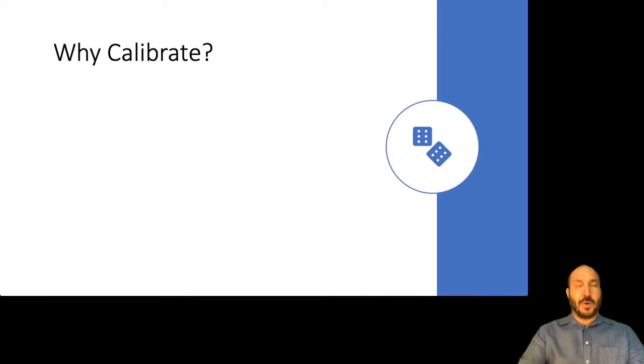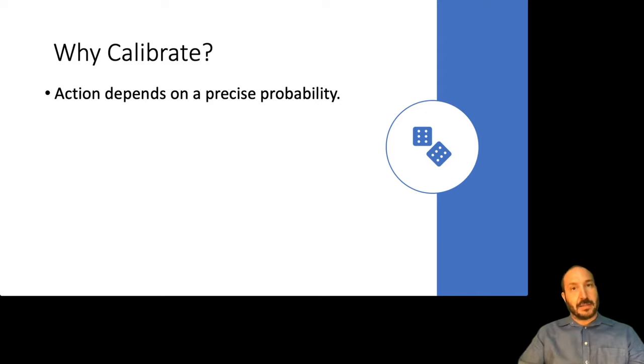So why would you want to calibrate a model? Why do we care about these probabilities? Well, one big reason is when your action depends on a precise probability. And I'll give a couple examples of this. If you're issuing a loan, it's important to know the precise probability that the person is going to pay back the loan so that you can set the interest rate properly so that over a large portfolio of loans, you'll be sure to make money. If you get that probability wrong, you might end up losing money if the default rate is actually higher than what you predicted it to be.